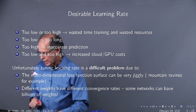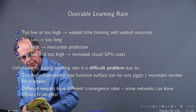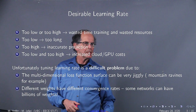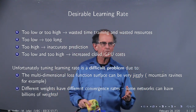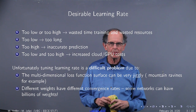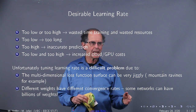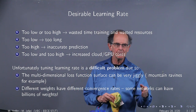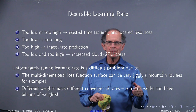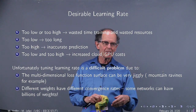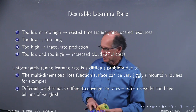Let's look at the learning rate — it could be too low or too high. Either one wastes time training and wastes resources. Too low means too long; too high means inaccurate. Too low and too high can cause increased cloud GPU costs, CPU costs, and transmission costs. Resources are wasted — not good.